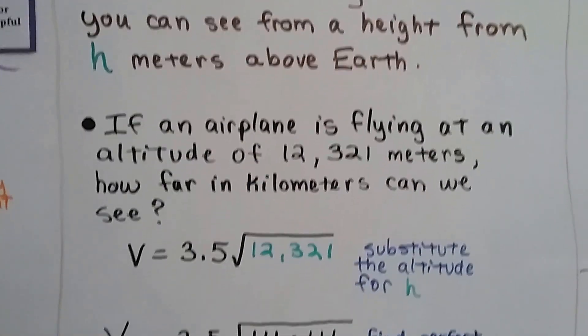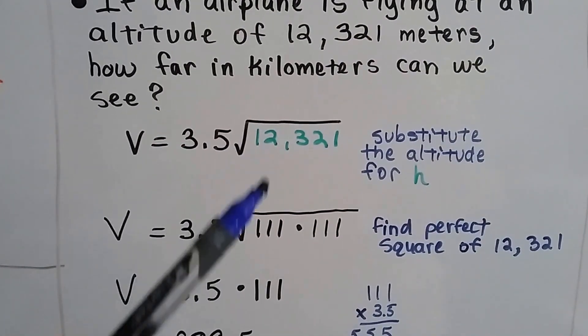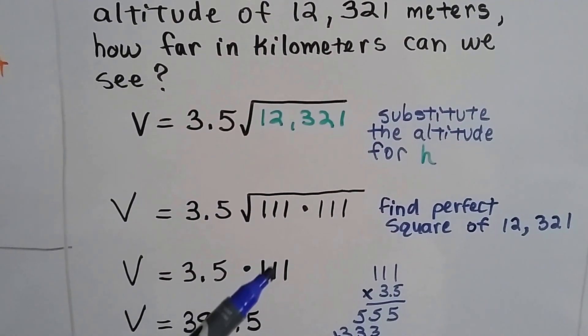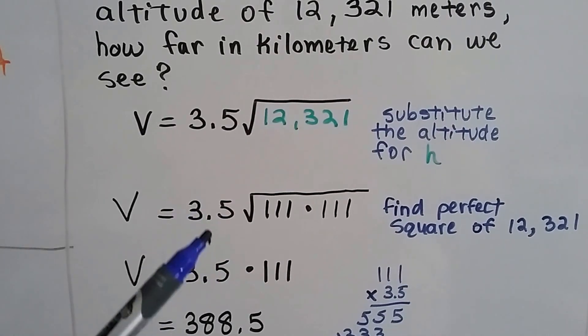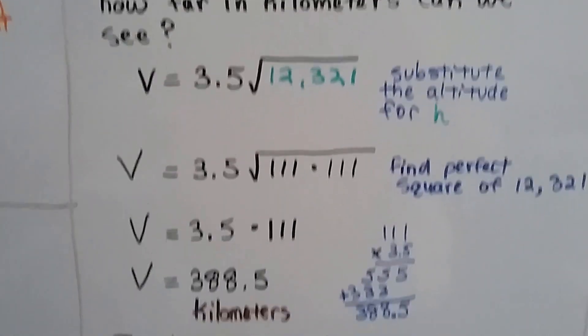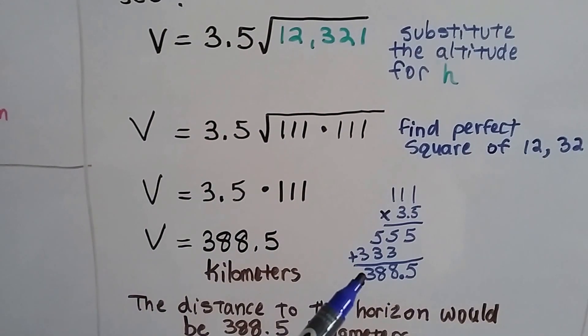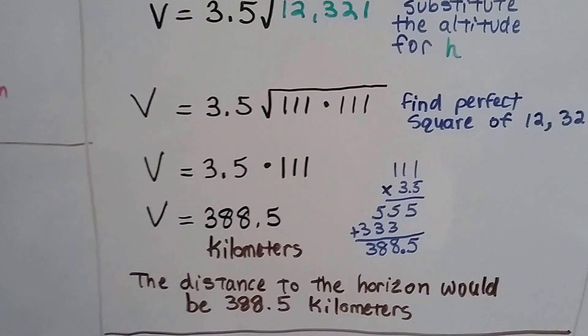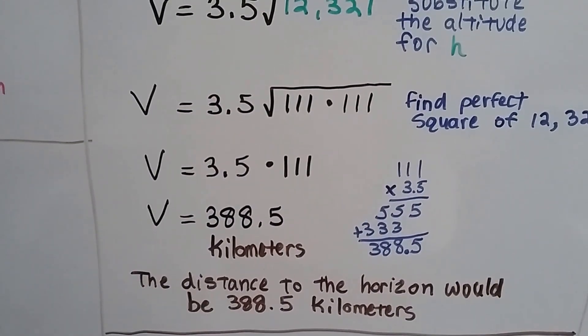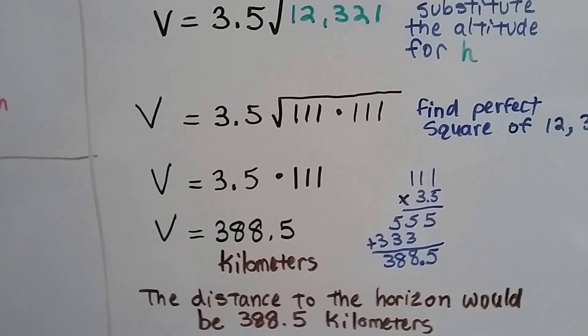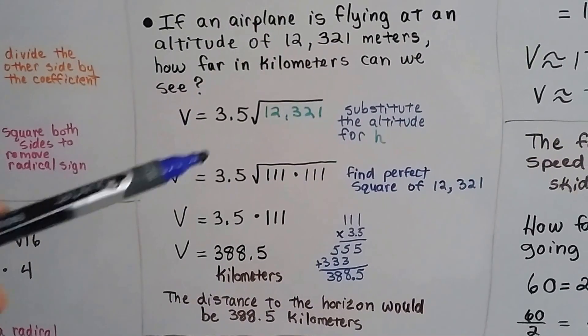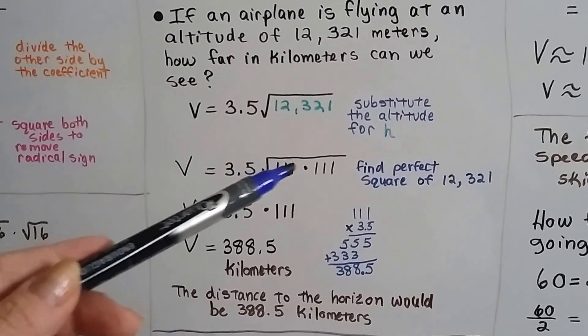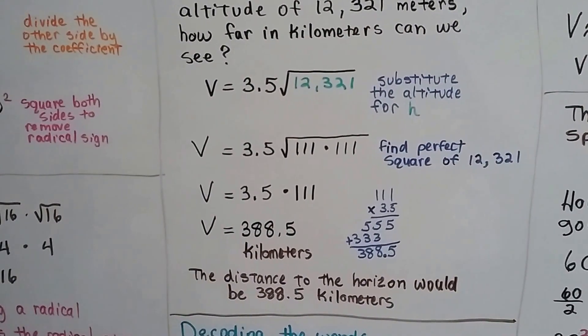We plug in the 12,321 for h, because that's the altitude, that's the height. We find a perfect square for 12,321, and that's 111 times 111. We pull one of them as a number to multiply by 3.5. We do 3.5 times 111, and we get 388.5. That is what v is in kilometers. The distance to the horizon would be 388.5 kilometers. What I did was, I plugged in the height, I found the squares here, I multiplied it, and got the answer.